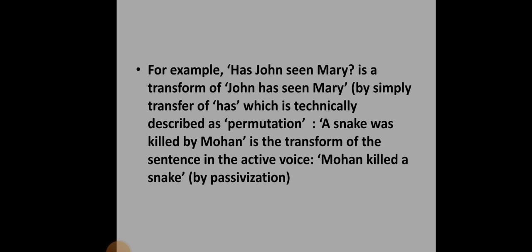For example, 'Has John seen Mary?' is a transform of 'John has seen Mary' by a simple transfer of 'has' which is technically described as permutation. 'A snake was killed by Mohan' is the transform of the sentence in the active voice 'Mohan killed a snake' by passivization.